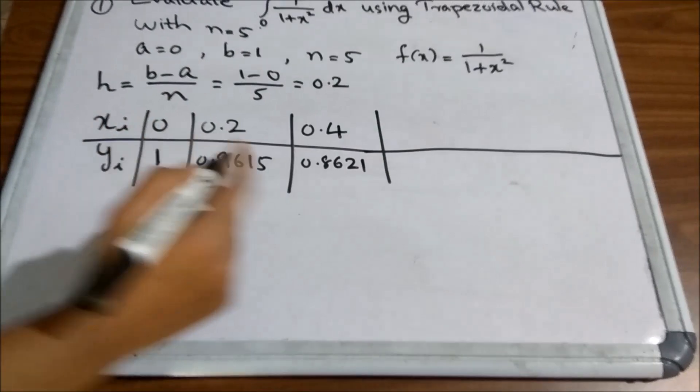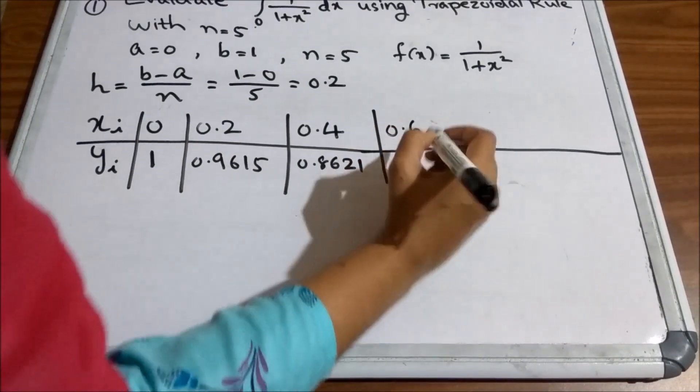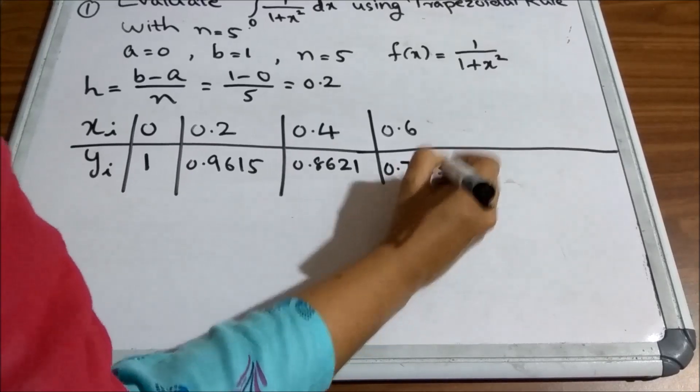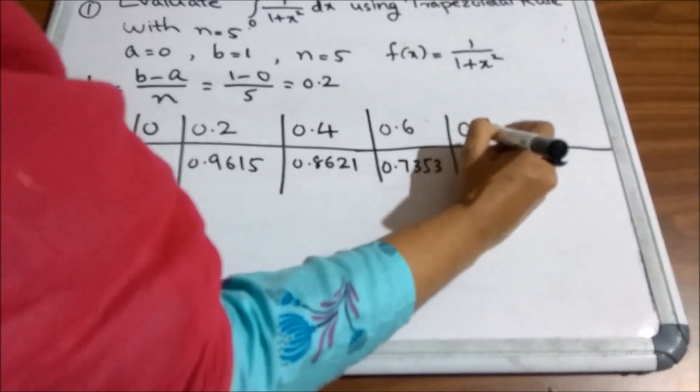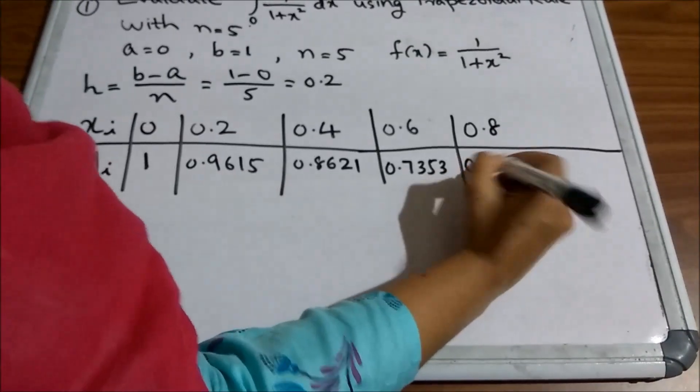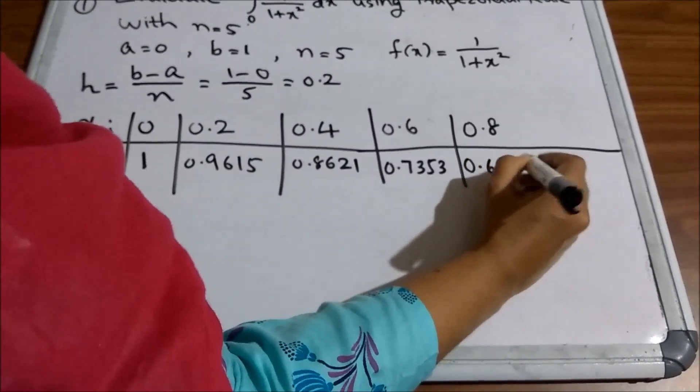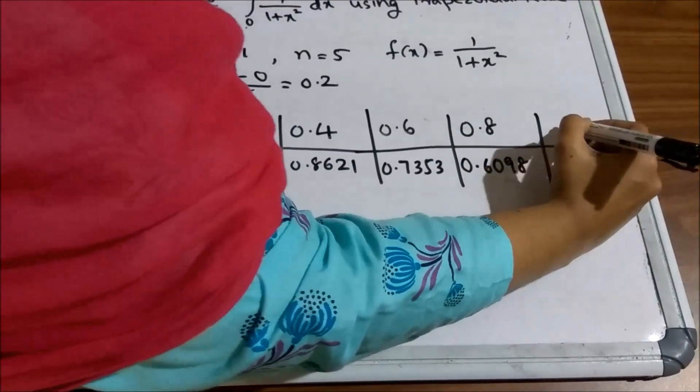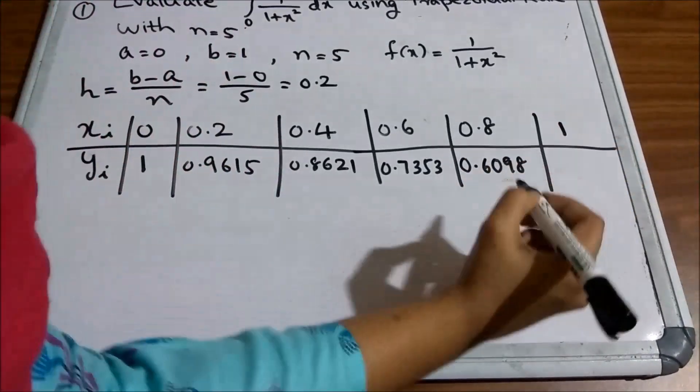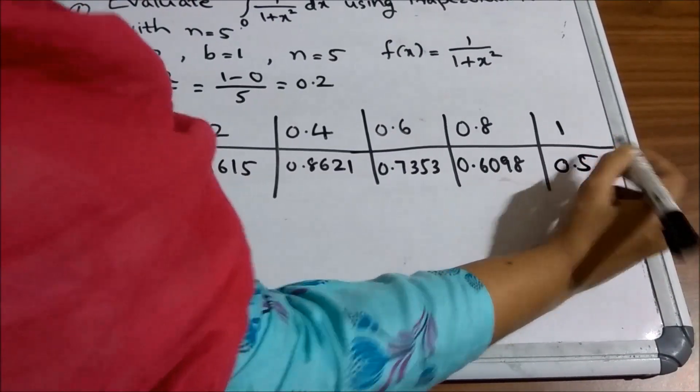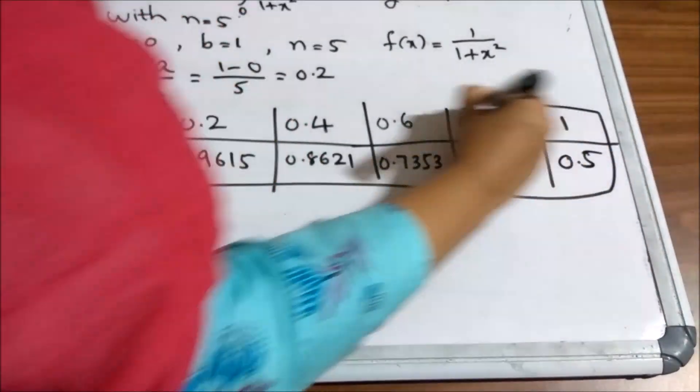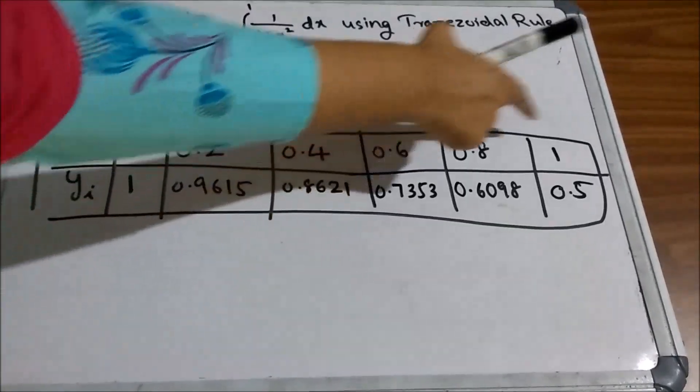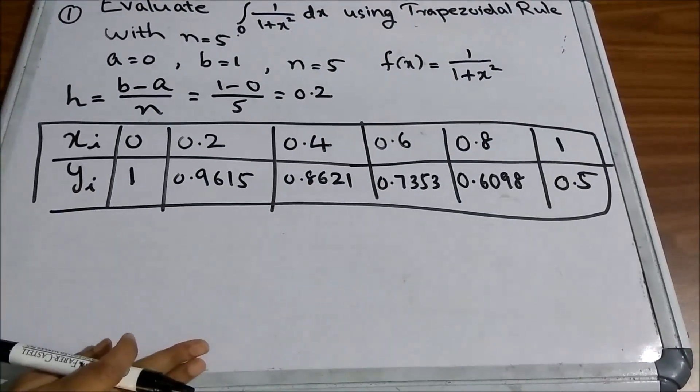Same way, you have to form the table corresponding to 0.6 you will get 0.7353, 0.8, 0.6098 and corresponding to x5 equal to 1, you can see it will be 0.5. So, first you have to form this table of values x0, x1, x2, x3, x4, x5 and corresponding values of yi.